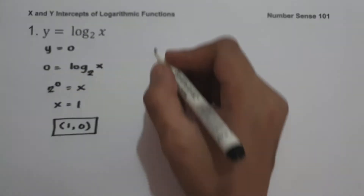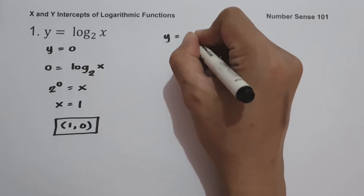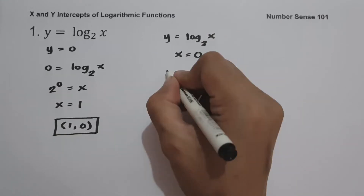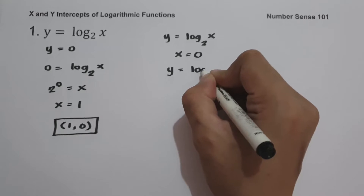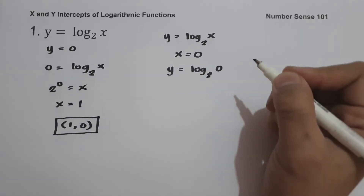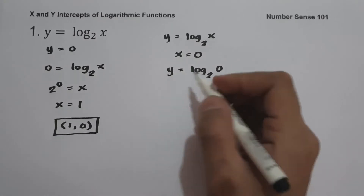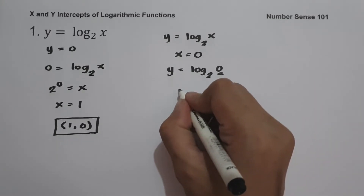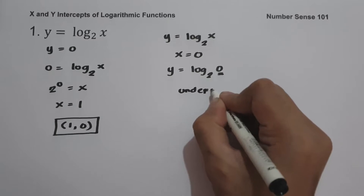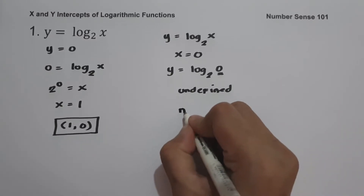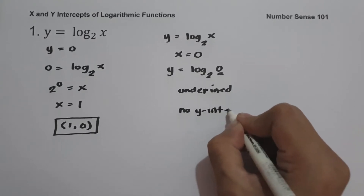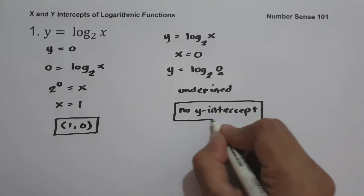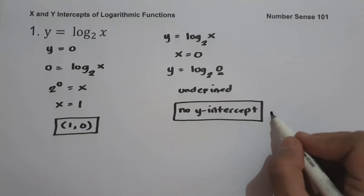And for our y-intercept, let us have y equals log x base 2 and let us set x equal to 0. So this will be y equals log 0 base 2. To determine the value of the y-intercept, our argument should be greater than 0. Since our argument is equal to 0, our logarithm is undefined. Therefore, we don't have a y-intercept — that means our graph will not cross the y-axis.